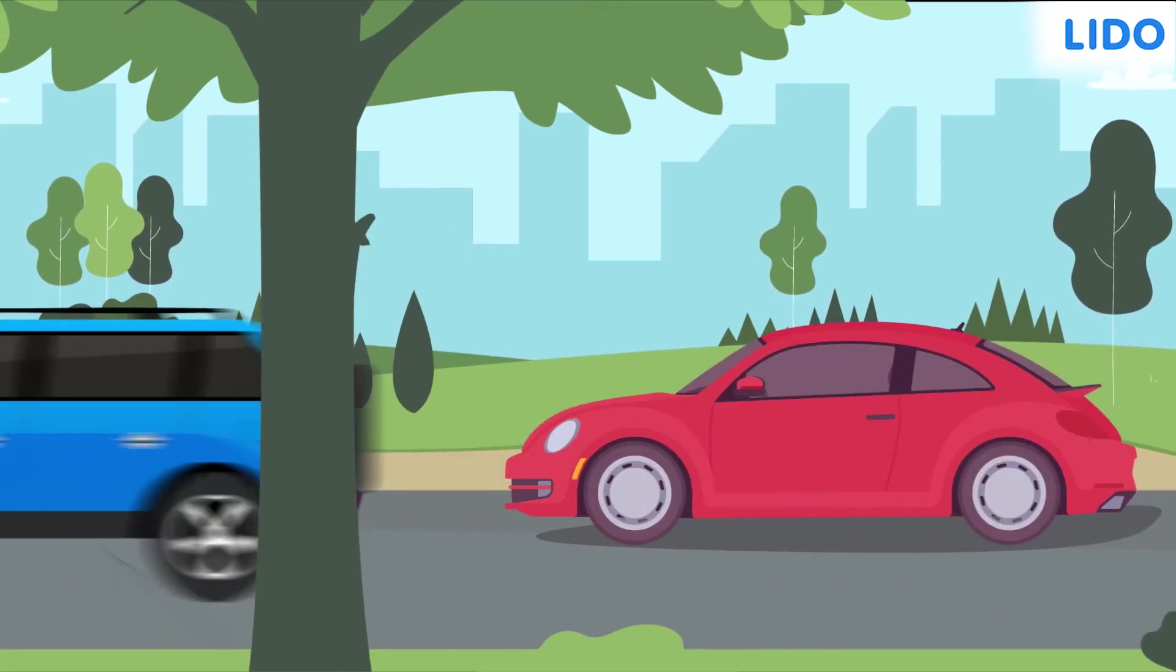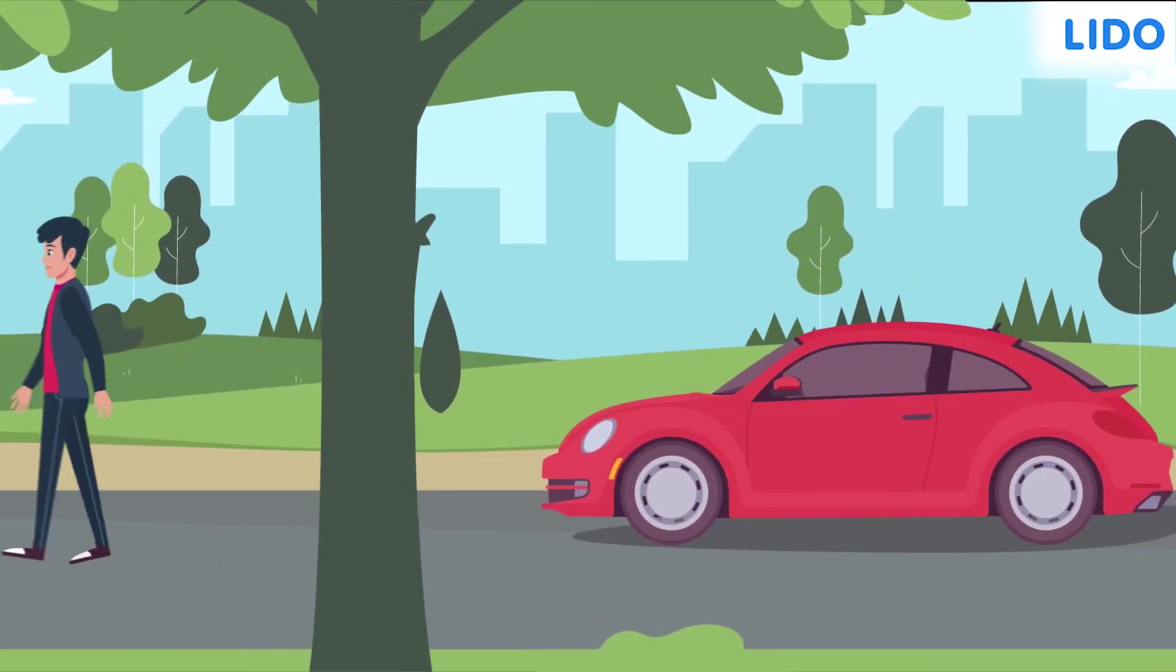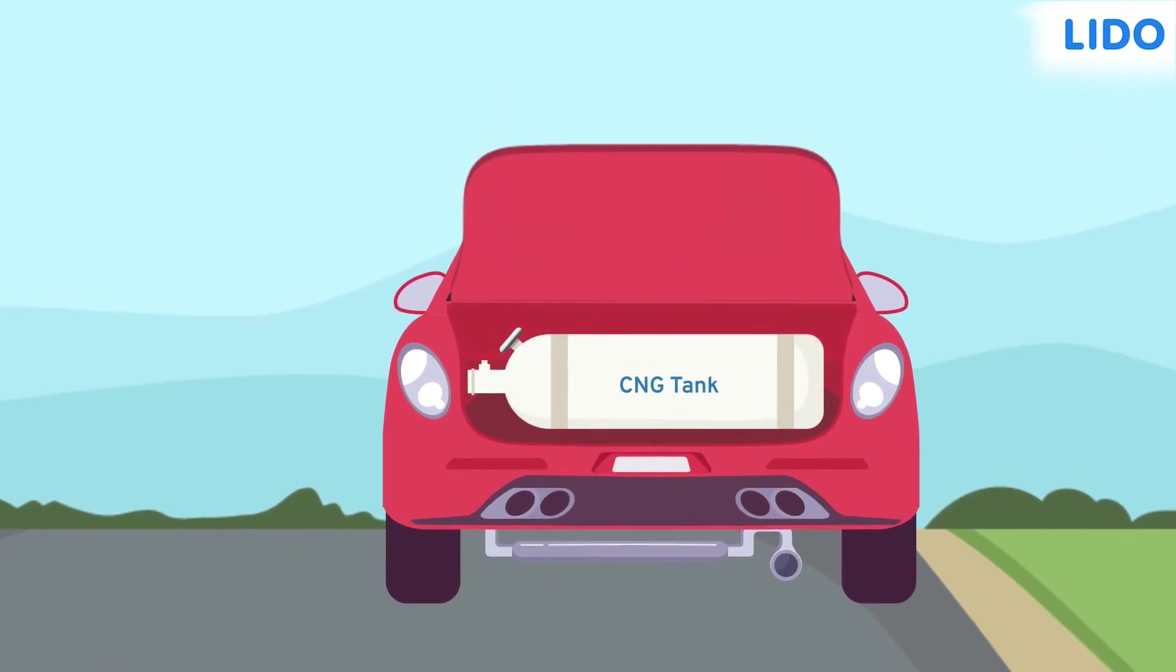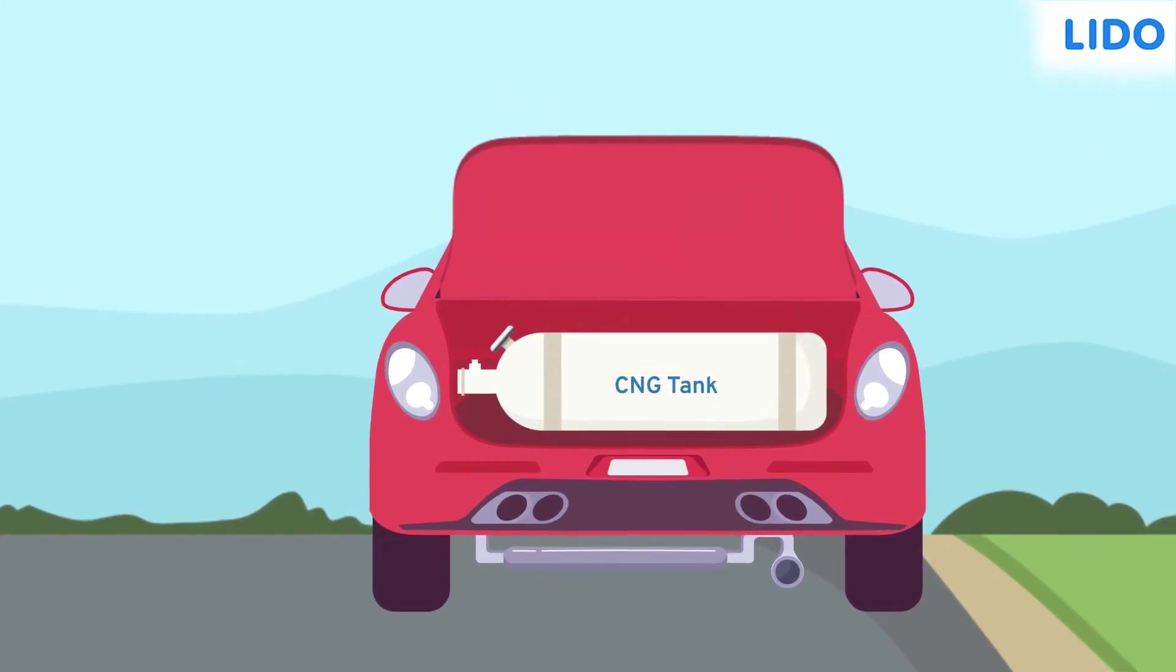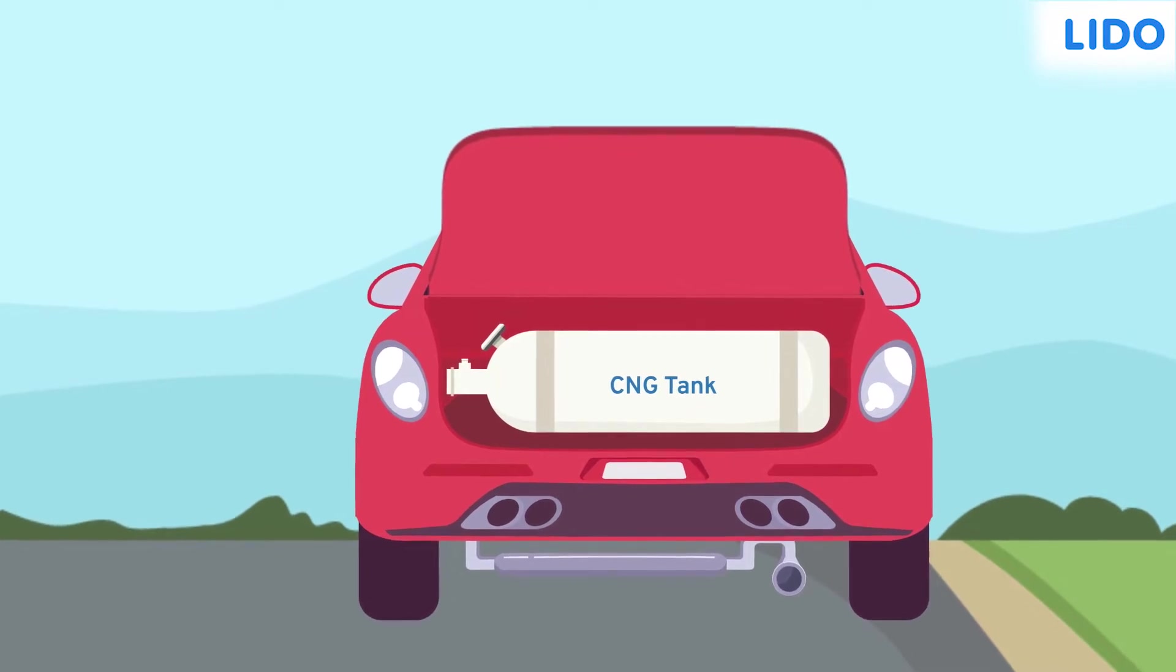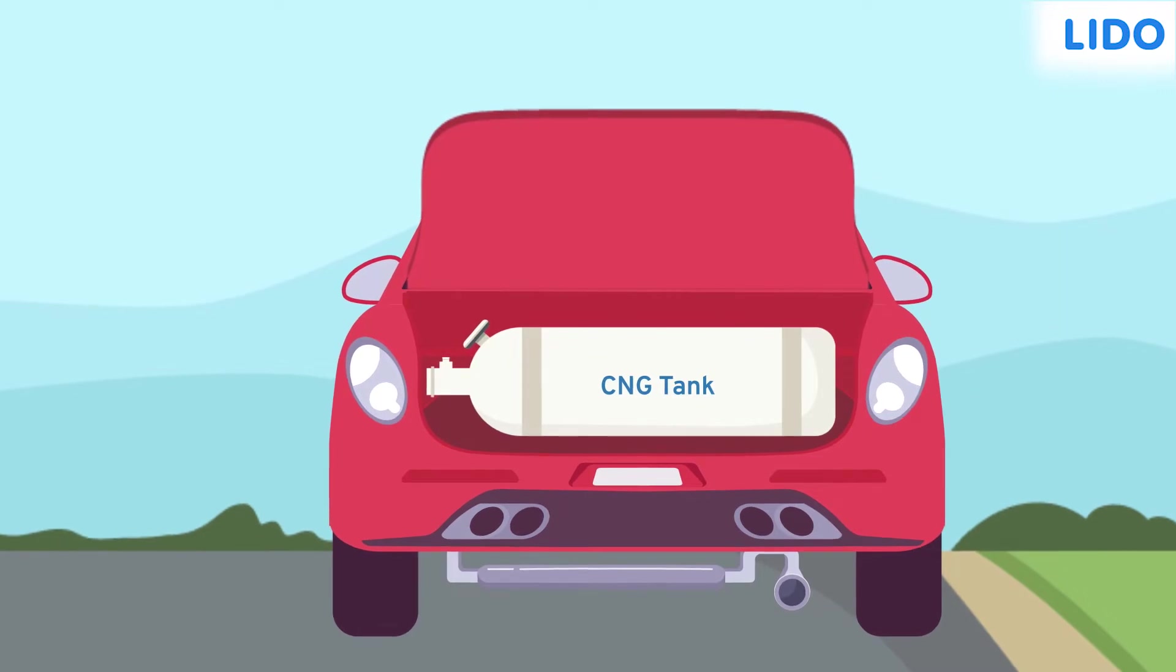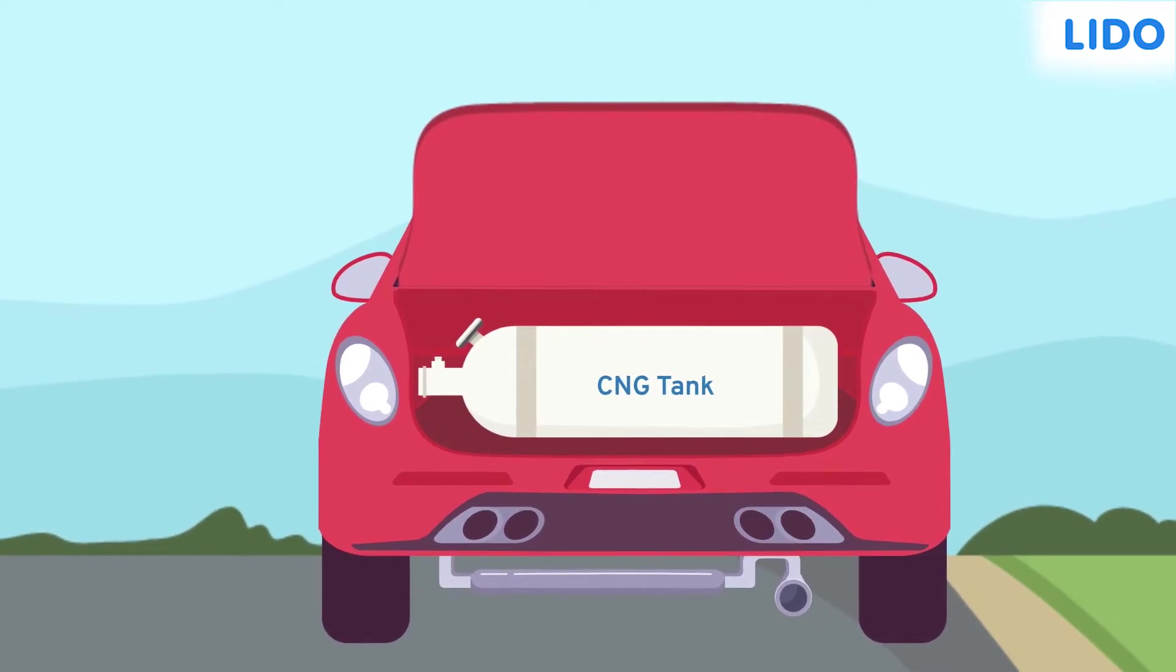Today Vishal had to walk all the way home because his car ran out of fuel. Vishal's car runs on CNG and he couldn't find a CNG station where his car ran out. Ever wondered where fuel vanishes from our cars? Do fuel molecules get destroyed while providing energy for the car to run?